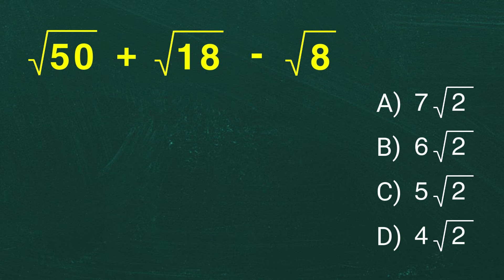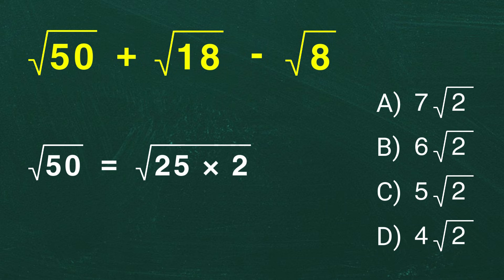Let's start simplifying square root of 50. To do this, we need to break it down into factors. Specifically, we are looking for one factor that's a perfect square. The number 50 can be written as 25 times 2. And here's a handy rule.